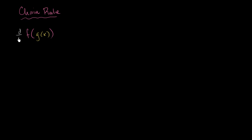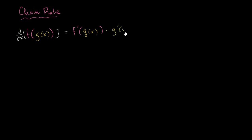My goal is to take the derivative of this business — the derivative with respect to x. What the chain rule tells us is that this is going to be equal to the derivative of the outer function with respect to the inner function. We can write that as f prime of g of x times the derivative of the inner function with respect to x.